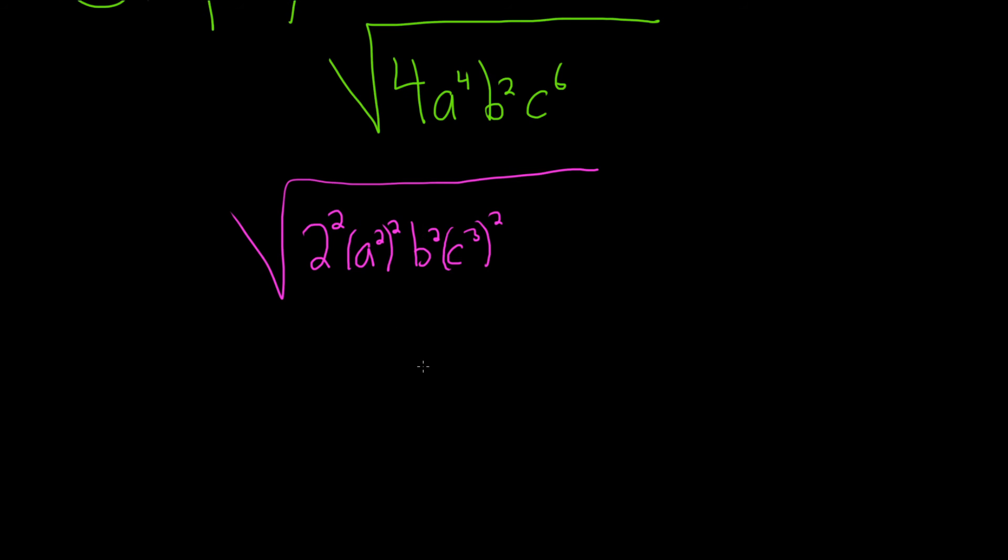Now we just take the square root of each piece. This will be the square root of 2 squared, the square root of a squared squared, the square root of b squared, and the square root of c cubed squared. Again, just taking the square root of each piece.